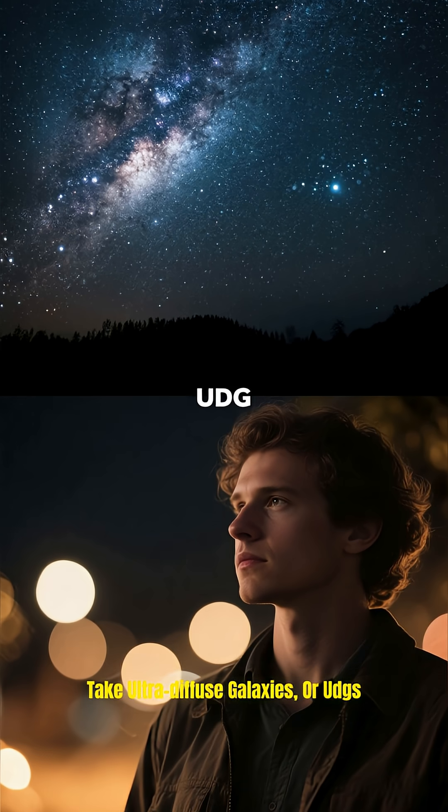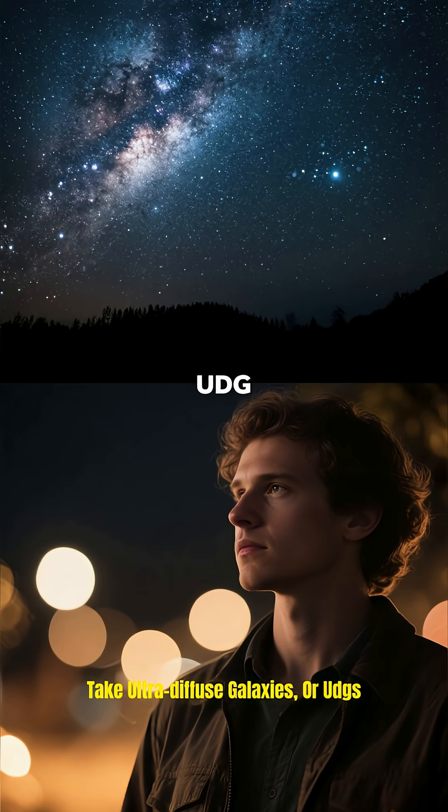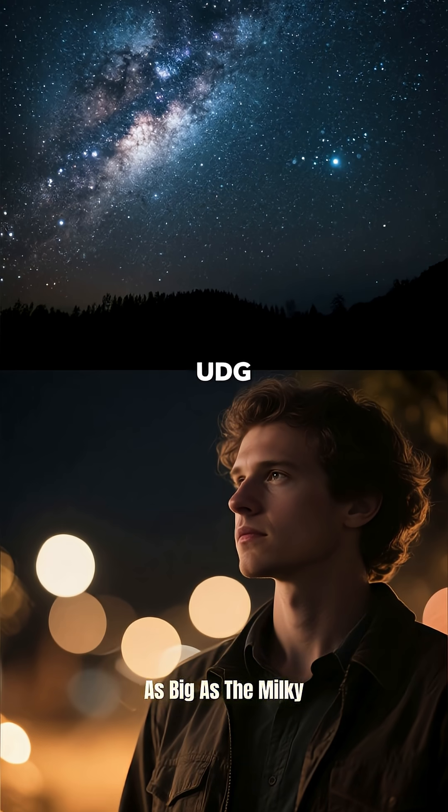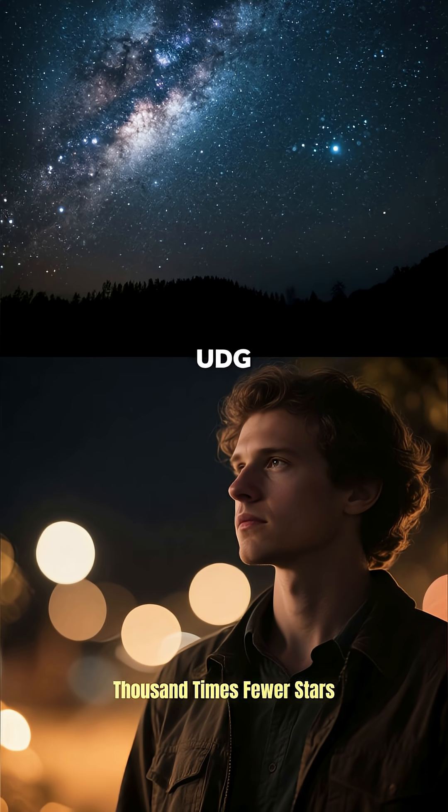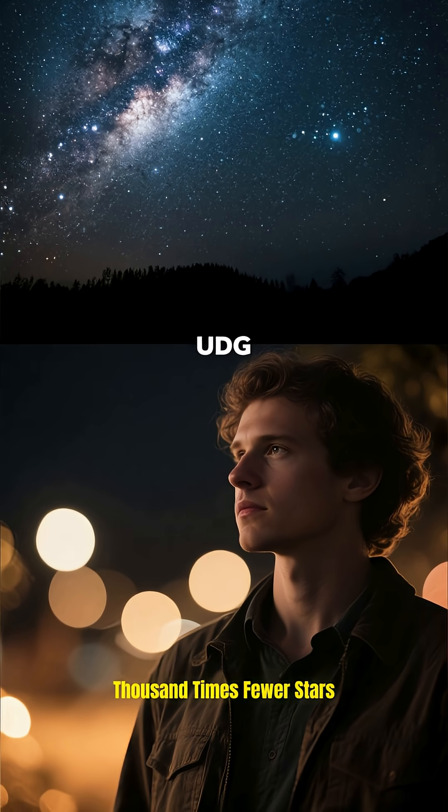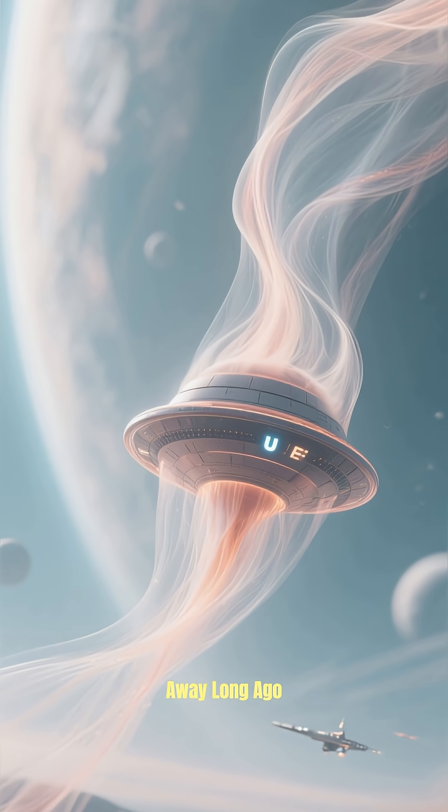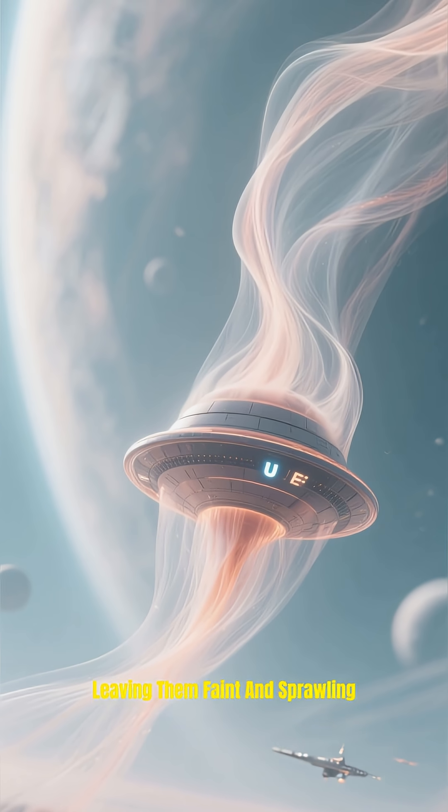Take ultra-diffuse galaxies, or UDGs. They're ghostly giants, as big as the Milky Way but with a thousand times fewer stars. Their gas was likely stripped away long ago, leaving them faint and sprawling.